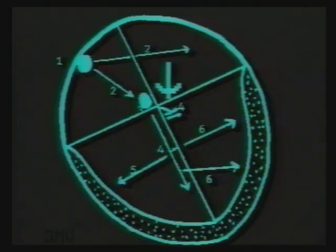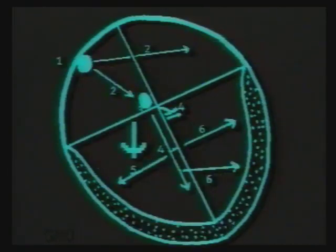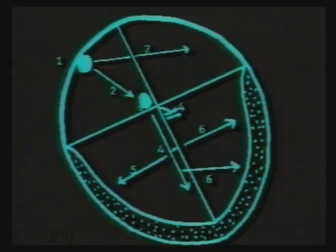In this diagram, the left bundle branch is interrupted. So the right ventricle gets depolarized in the normal sequence, and then the impulse passes across the septum to the left ventricle.